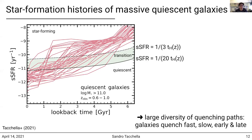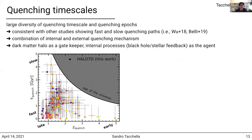We can also look at this in a parameter space showing the quenching timescales in gigayears as a function of the quenching epoch — the redshift at which galaxies quench. Again, you can see that our galaxies span a wide range in both redshift and quenching timescales.